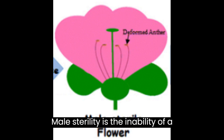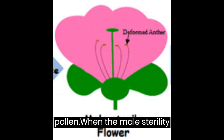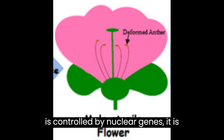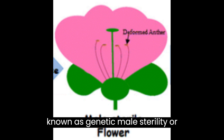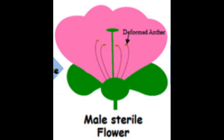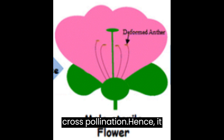Male sterility is the inability of a plant to produce functional anthers or pollen. When male sterility is controlled by nuclear genes, it is known as genetic male sterility or nuclear male sterility. It prevents self-pollination and promotes cross-pollination.